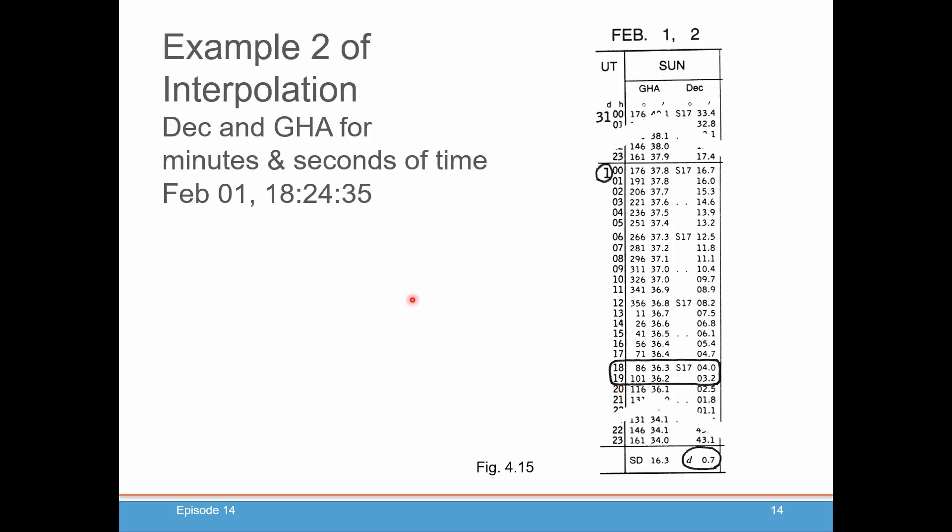Let's go for a second example. February 1st, 1800 hours, 24 minutes, 35 seconds. We look in our table for February 1st. At the 1800 hour mark, we pull that out. And we notice our D. We're going to pull out the 19 hours just for some confirmation of our numbers.